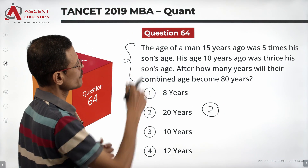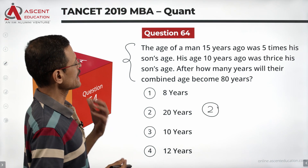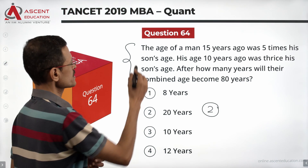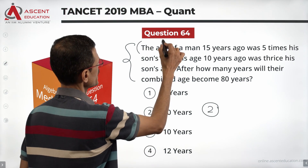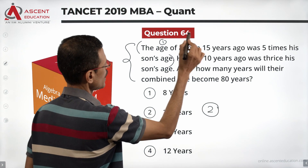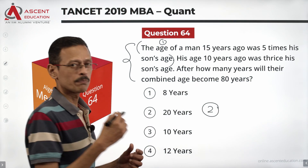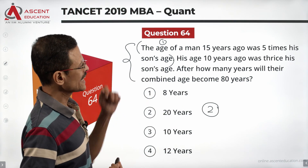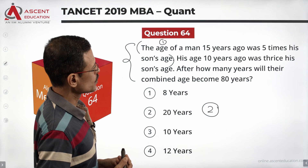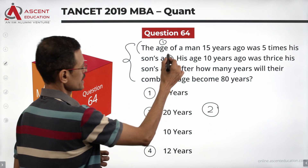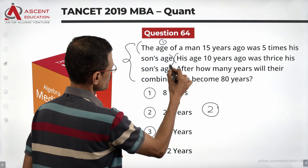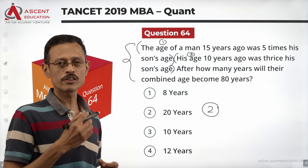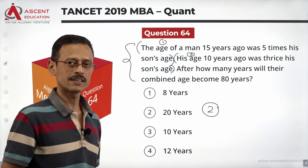The age of a man 15 years ago was 5 times the son's age. First information: 15 years ago, compared to the present. His age 10 years ago was thrice his son's age. Second information: 10 years ago, compared to the present.